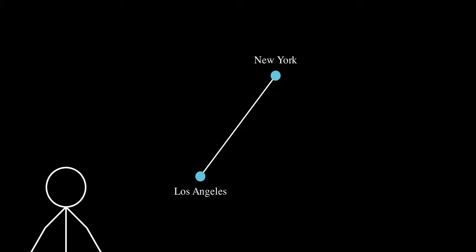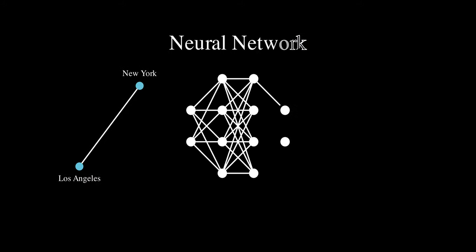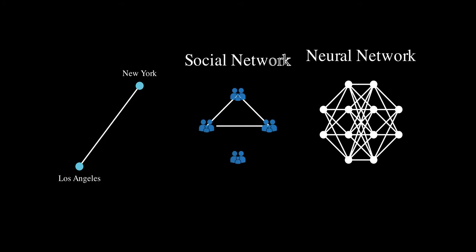Graphs, or networks, offer just that. A way to model the connections between objects, whether that be an airline route between two cities, a neural network, or even connections between friends. All of these connections, and more, can be studied within the context of the field of graph theory.